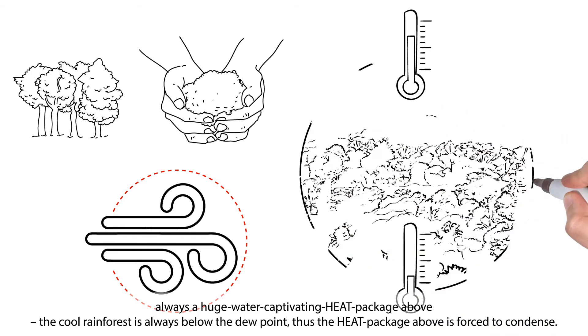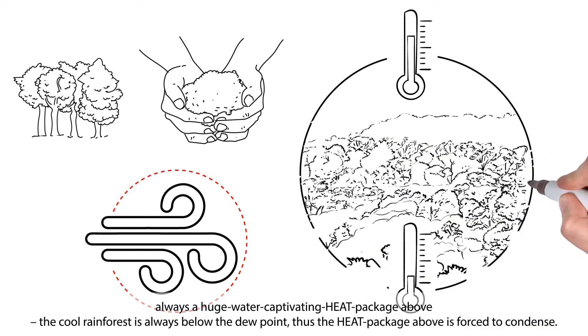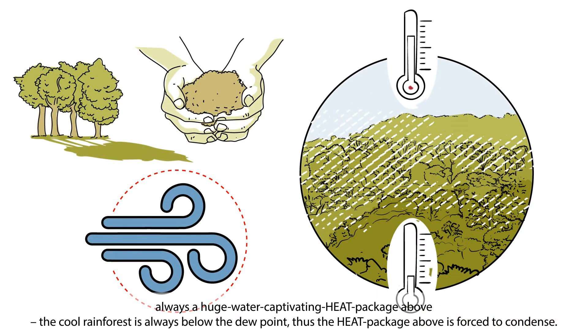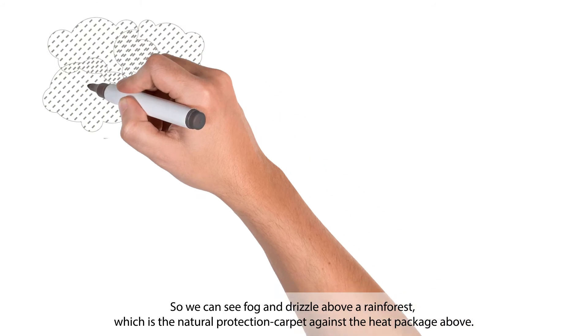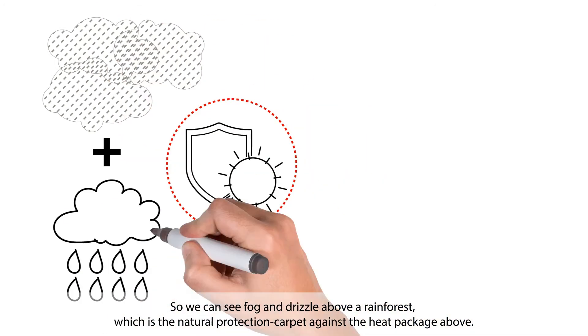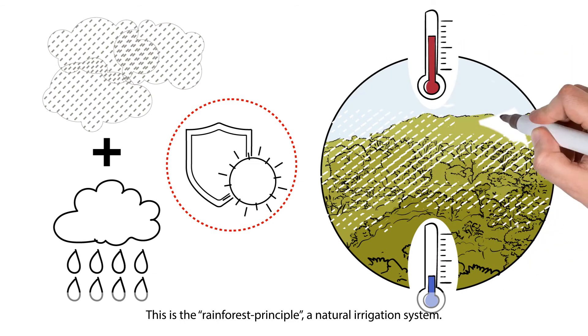With a huge water-captivating heat package always above, the cool rainforest is always below the dew point. Thus the heat package above is forced to condense. We can see fog and drizzle above a rainforest, which is the natural protection carpet against the heat package above. This is the Rainforest Principle, a natural irrigation system.